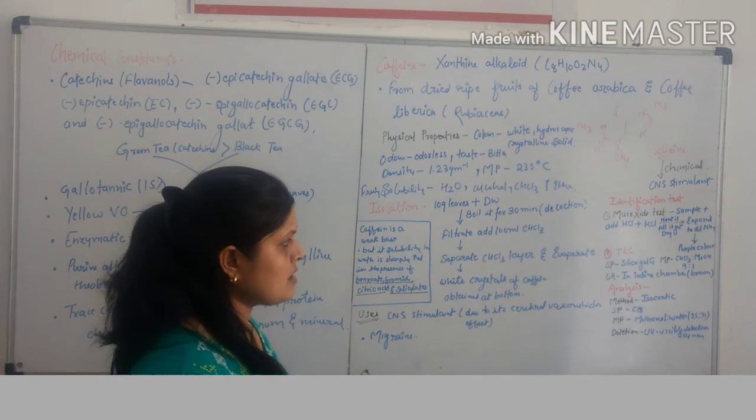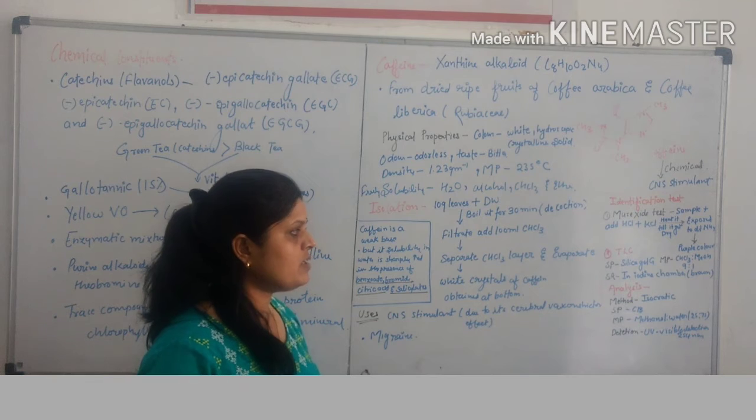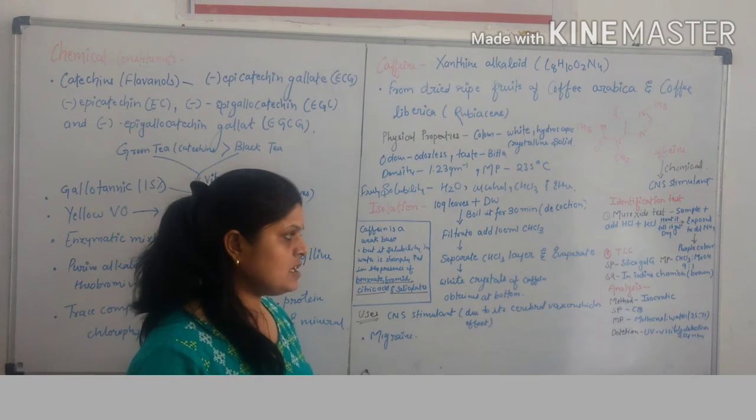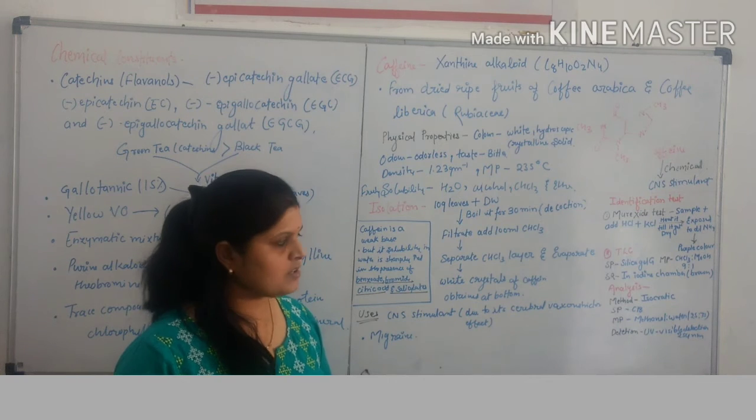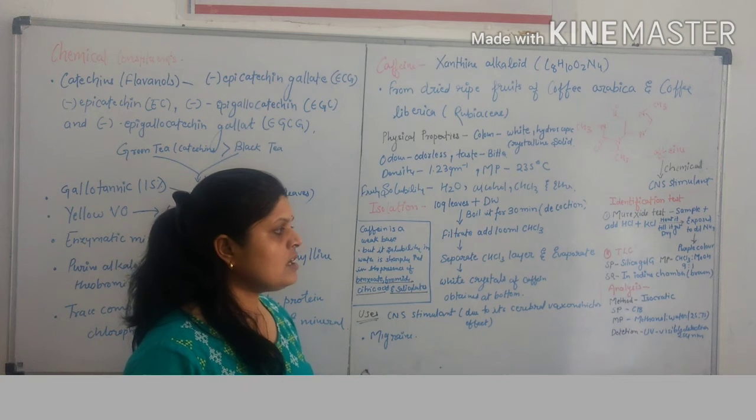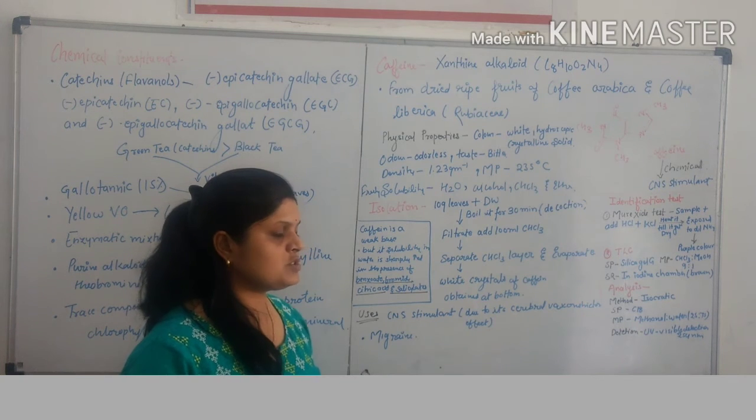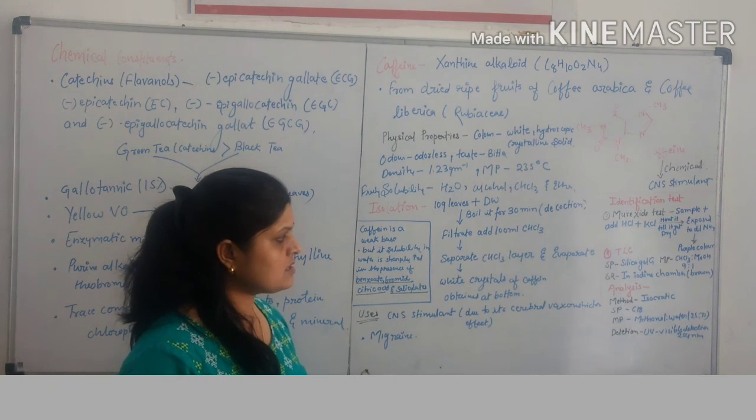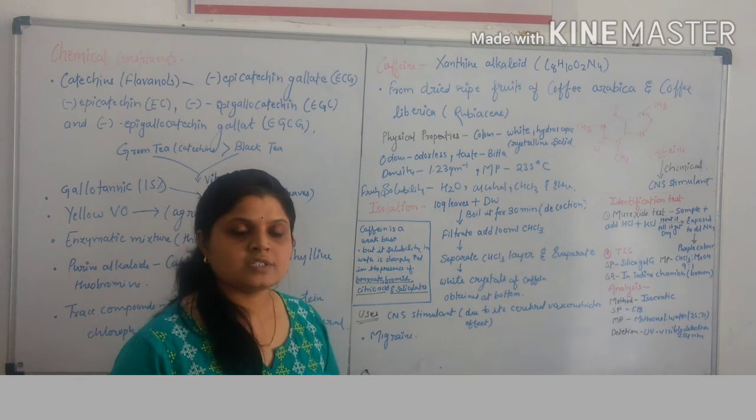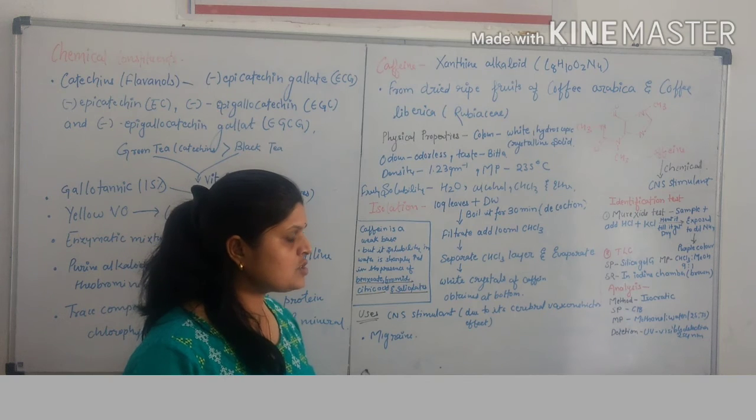It is also identified by thin layer chromatography. Silica gel G is used as stationary phase, chloroform-methanol 90:10 is used as mobile phase, and iodine chamber is used as detecting agent, in which brown color spot is produced.